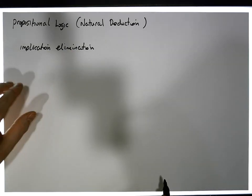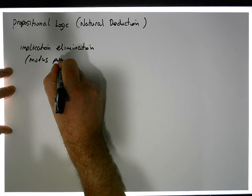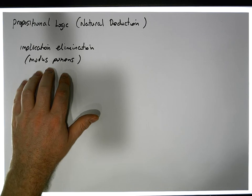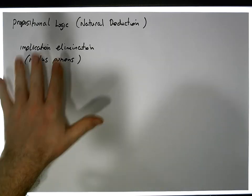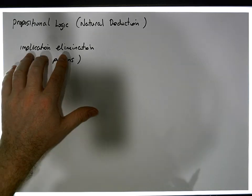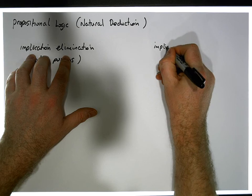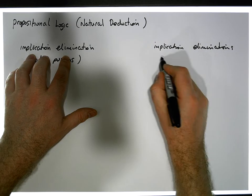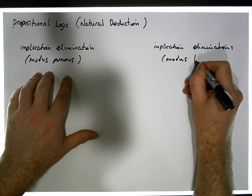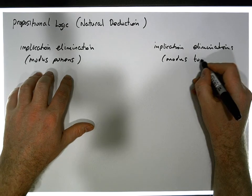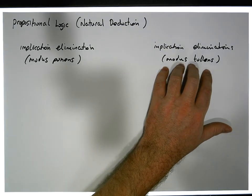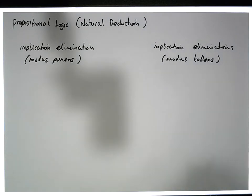The first form is known as modus ponens. This is Latin for 'a mode that by affirming affirms.' The second form of implication elimination is known as modus tollens, which has to do with 'a mode that by denying denies.' Let's have a look at the actual rules that allow us to remove an implication when presented with one.